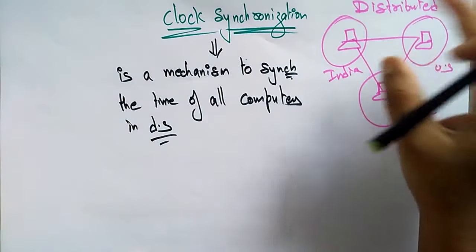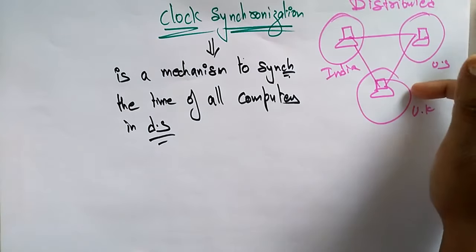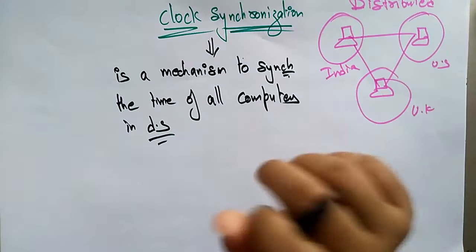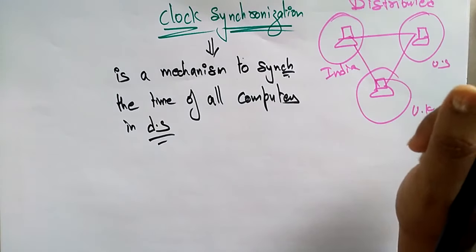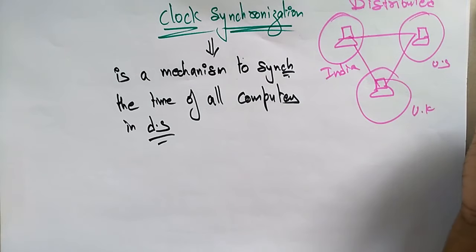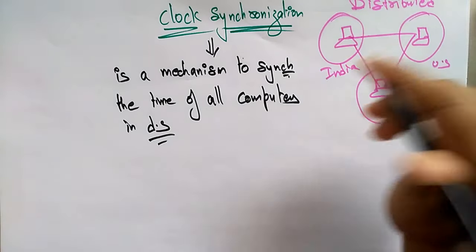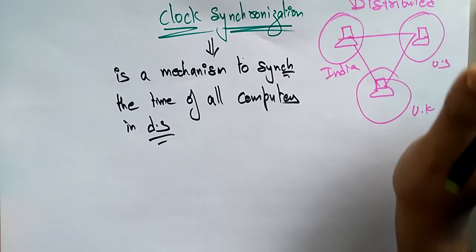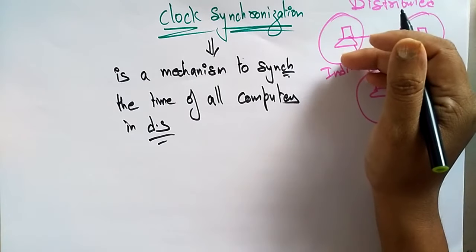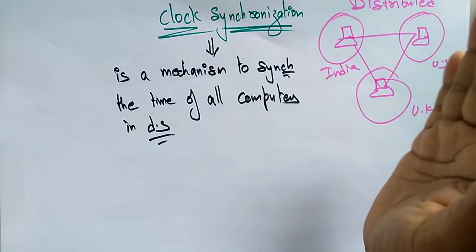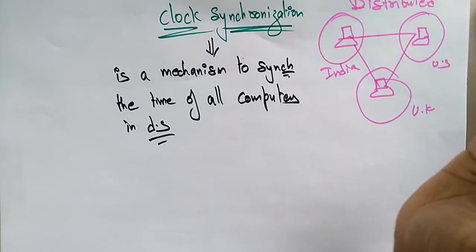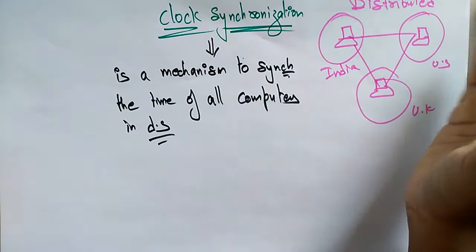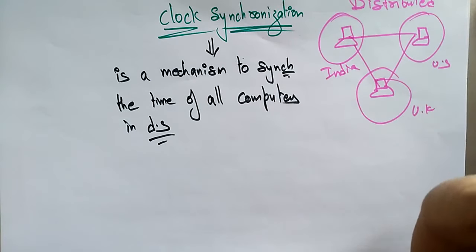I have to maintain the same time — even though different countries show different times, I have to maintain the same time for all computers so I can maintain synchronization in the distributed environment. Synchronization in a distributed system is more complicated than in a centralized system. Distributed synchronization is harder to implement compared to the centralized system because we have to use distributed algorithms to maintain data synchronization.